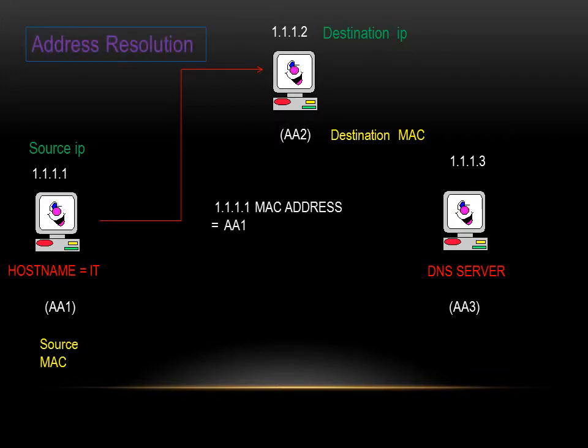Therefore, at the sixth step, AA1 tells AA2 that IP 1111 belongs to the MAC address AA1.